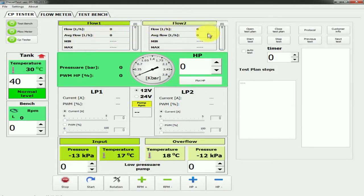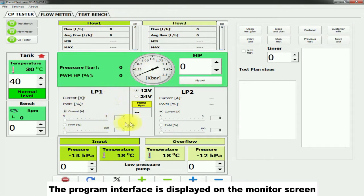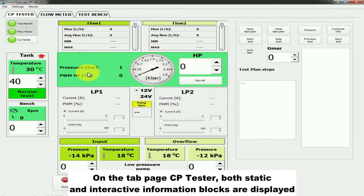Run the Diesel Test program. The program interface is displayed on the monitor screen. On the tab page CP Tester, both static and interactive information blocks are displayed.